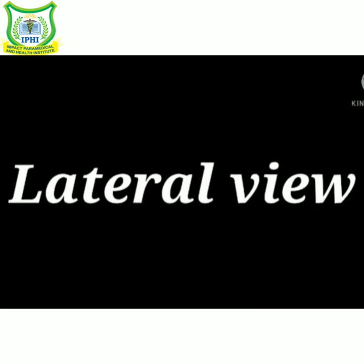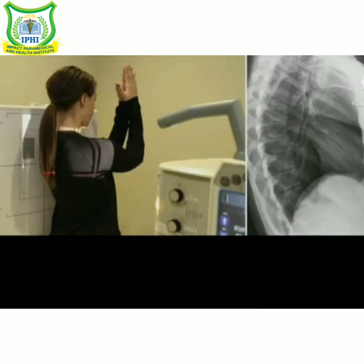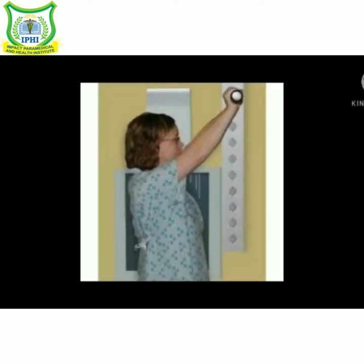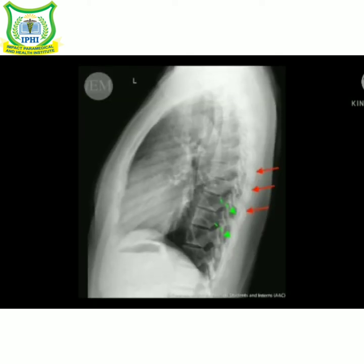Now, lateral view. From the PA projection, the patient is rotated 90 degrees to bring the side under examination in contact with the cassette. Hands are folded above the head and the median sagittal plane of the body is parallel to the cassette. The centering is at the T4 vertebra level at right angle to the film.